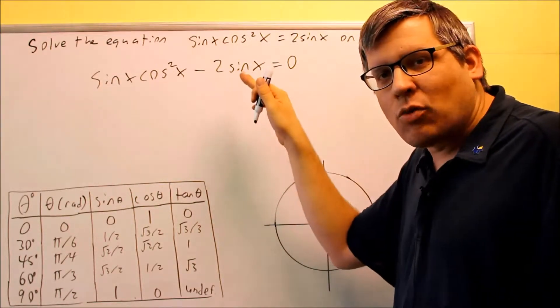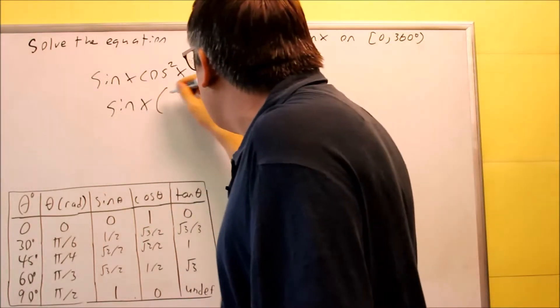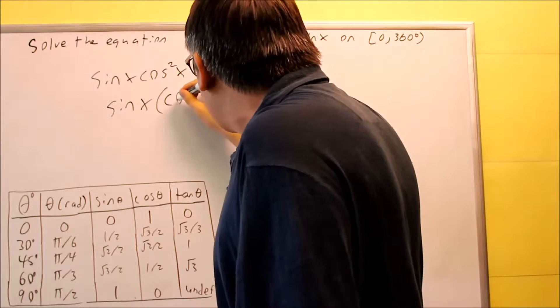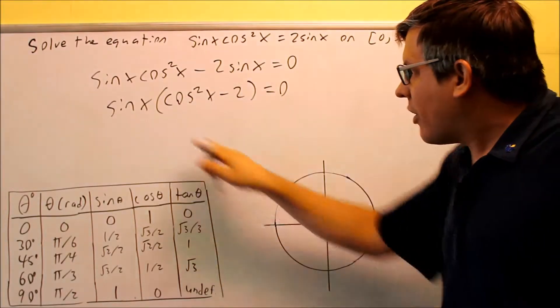In this case, the sine repeats twice. That's our common factor. So you're going to pull out the sine x, and then you get cosine squared x minus 2 left over. So now I have this.